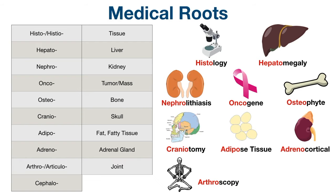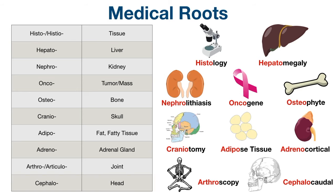Arthro and articulo mean joint. For example, arthroscopy is a surgical procedure that examines the inside of a joint, and this helps diagnose and treat joint conditions. Finally, we have cephalo, which refers to head. For example, cephalocaudal means proceeding or occurring in the direction from head to tail.